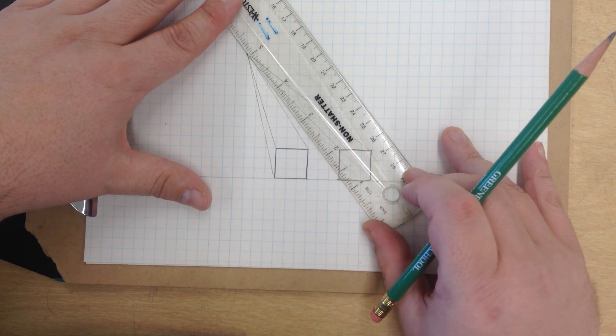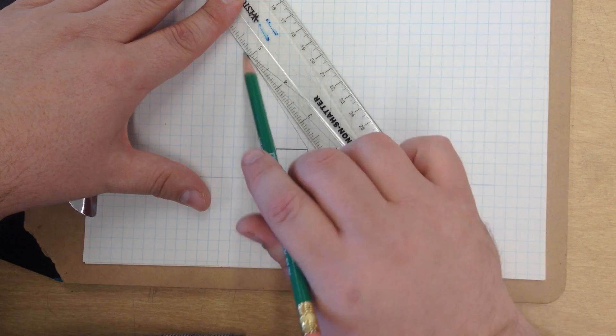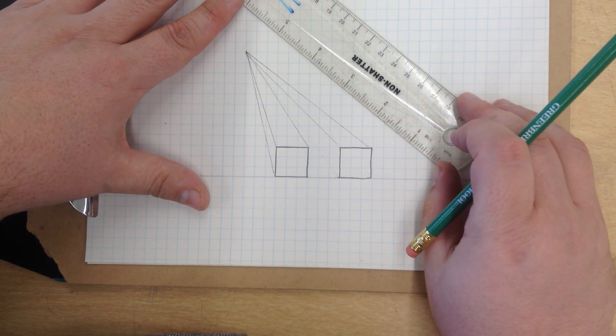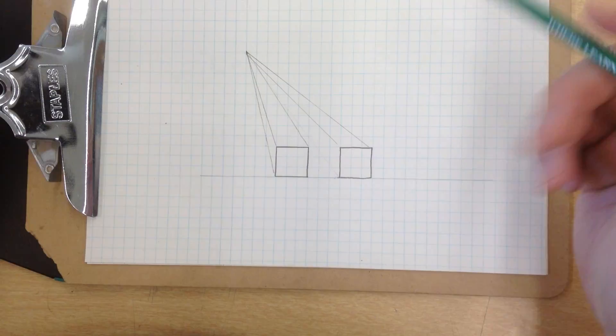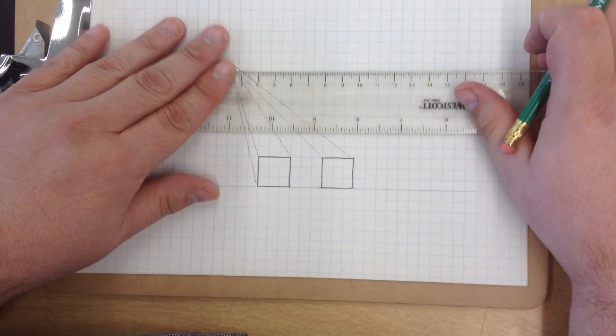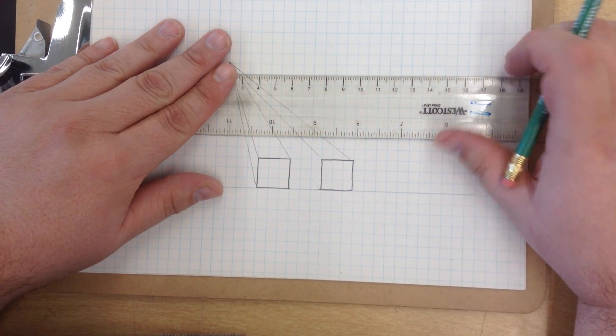And they're fairly light lines. I'm making this a little bit darker so you can see it in the video. Now that I have those vanished, I'm going to establish a back edge.